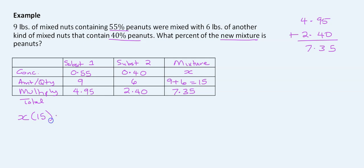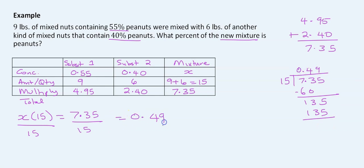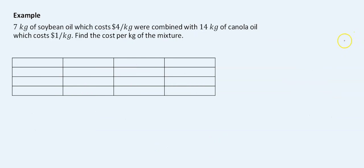We set up: x × 15 = 7.35. Dividing both sides by 15: 7.35 ÷ 15 = 0.49. So 49% of the new mixture is peanuts.